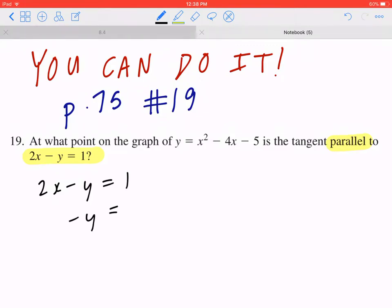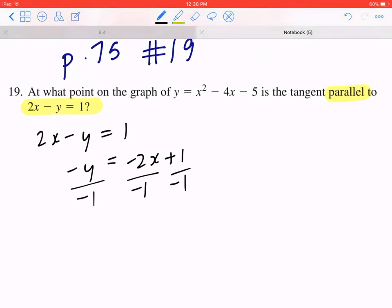If you bring negative, or if you bring 2x to the right hand side, that becomes negative 2x plus 1. The opposite of multiplying by negative 1 is dividing by negative 1, so y equals 2x minus 1. This means the slope is going to be 2.